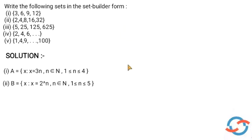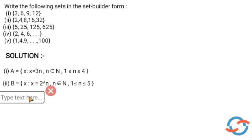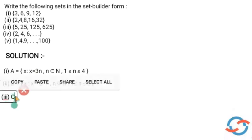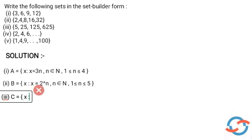The next question is the set {5, 25, 125, 625}. This is similar to the previous question. 25 = 5², 125 = 5³, 625 = 5⁴. So the common property is 5 raised to n, meaning x = 5ⁿ.